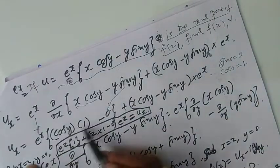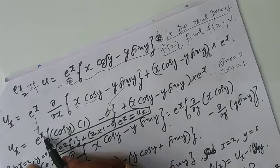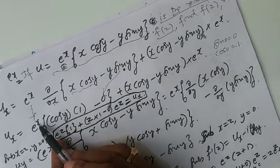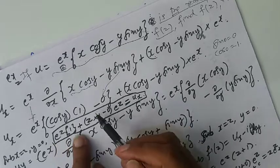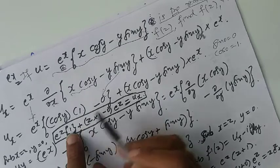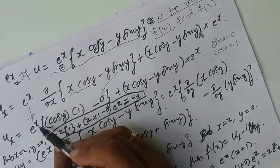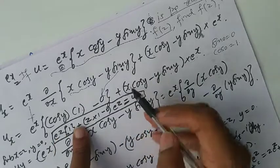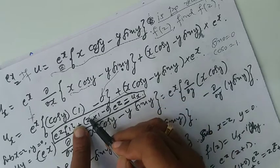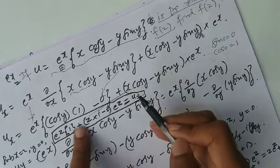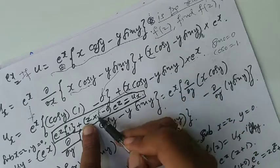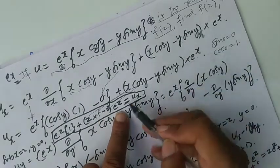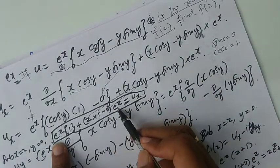Now substitute x equal to z, y equal to 0 throughout this expression. Putting x equal to z gives e to the power z. Putting y equal to 0: cos 0 equals 1, and 0 times sin 0 equals 0. So the first part gives e to the power z times 1, and the second part gives z times cos 0 (which is 1) minus 0 times sin 0 times e to the power z. Therefore ux evaluated at x=z, y=0 equals e to the power z plus z into e to the power z.